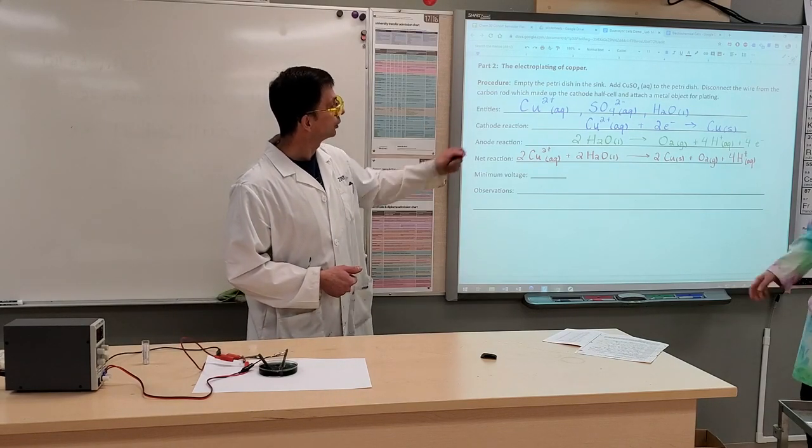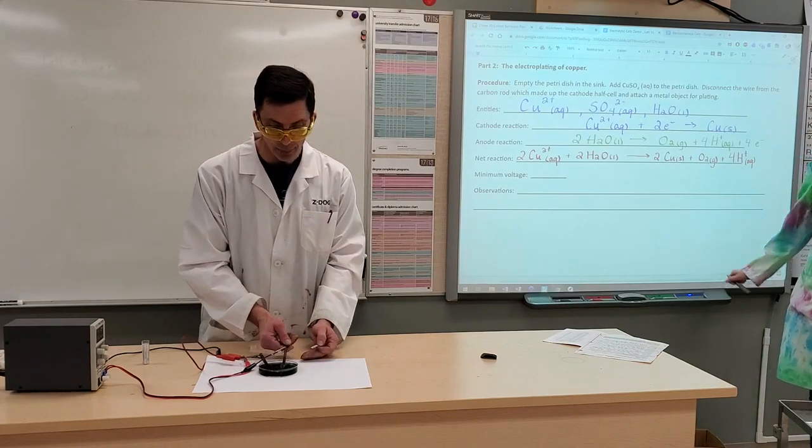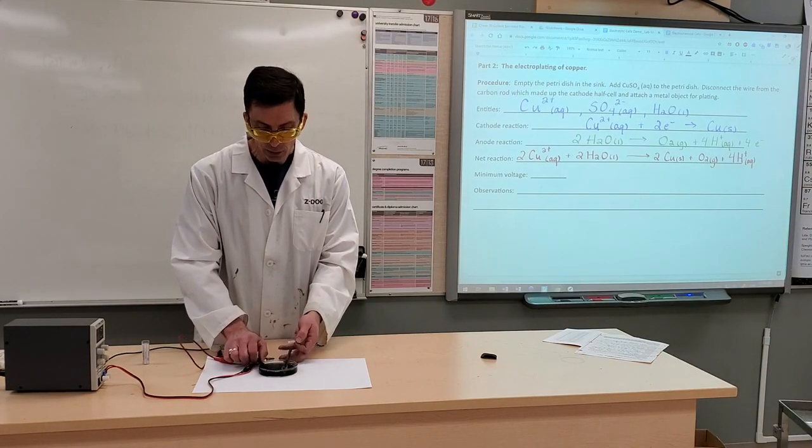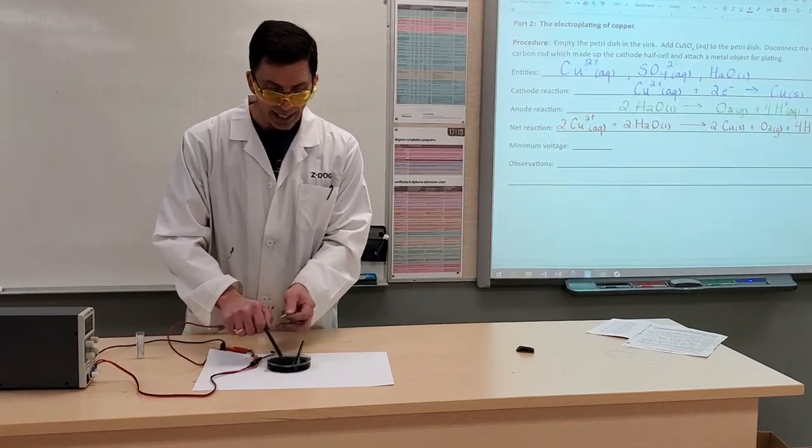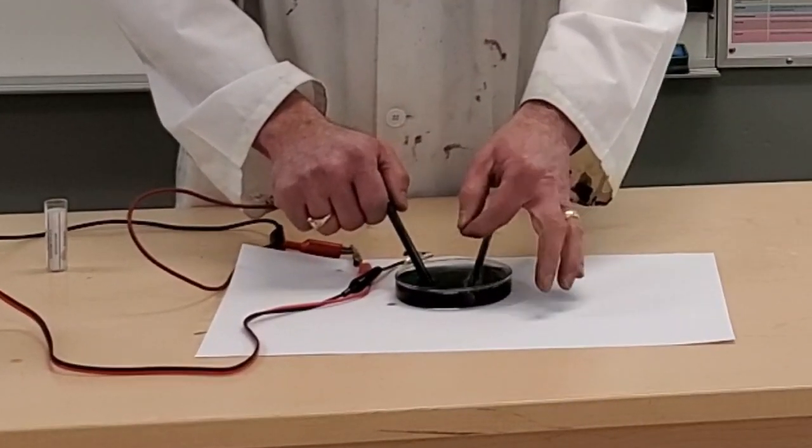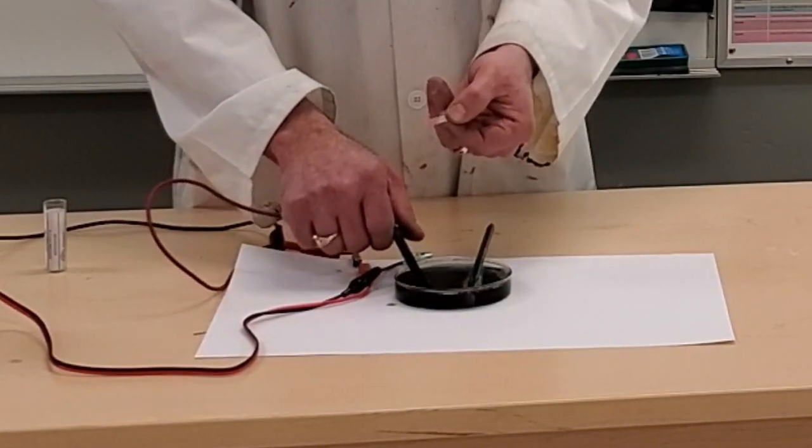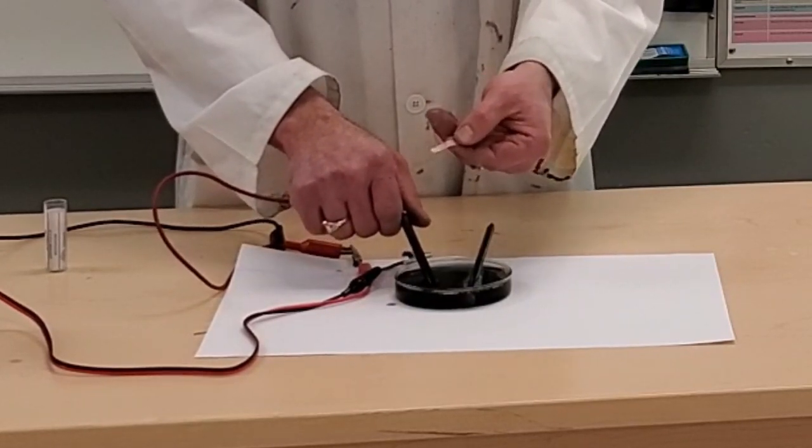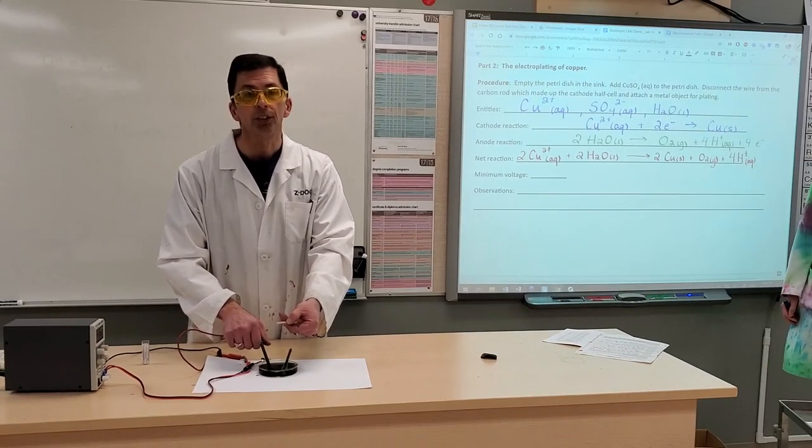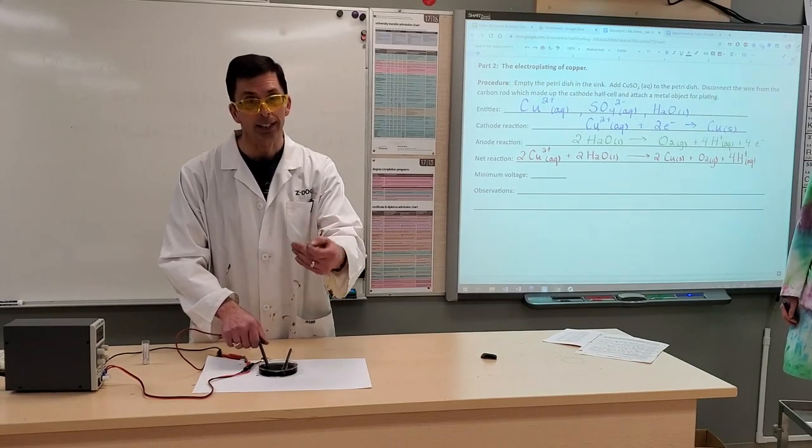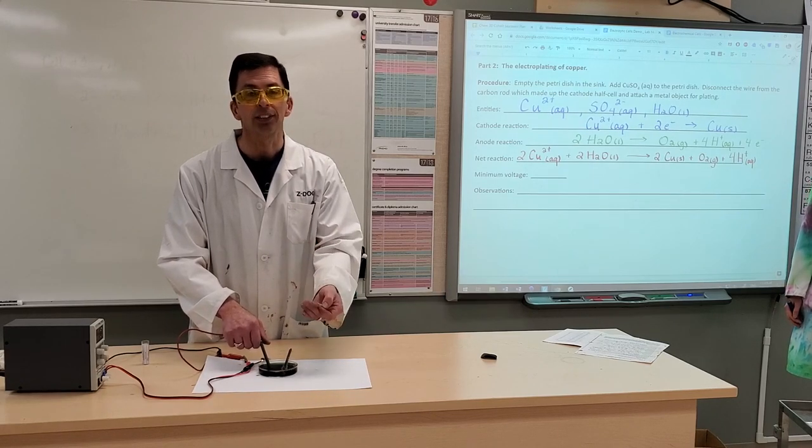The cathode reaction shows the reduction of copper ions into copper atoms. Our anode is labeled positive. We have oxygen gas bubbles produced at the anode. And in addition, you can see the evidence of hydrogen ions produced here as the blue litmus turns to red. So this concludes a demonstration of electroplating, which is one of the functions of electrolysis.